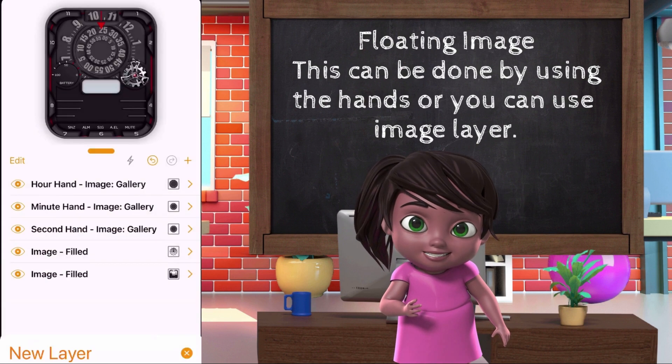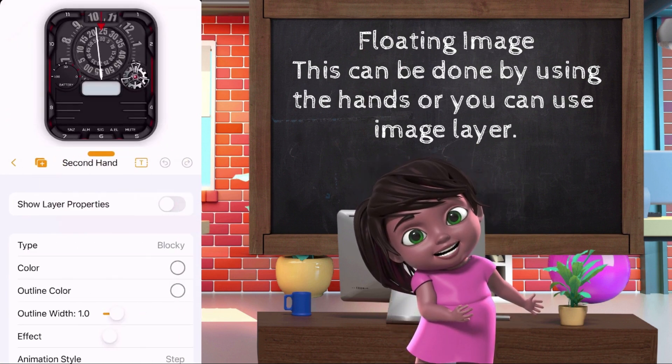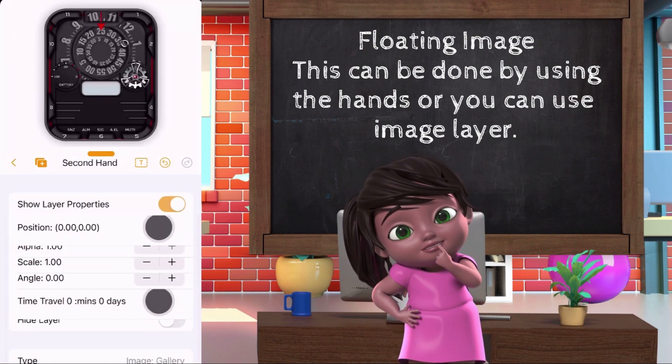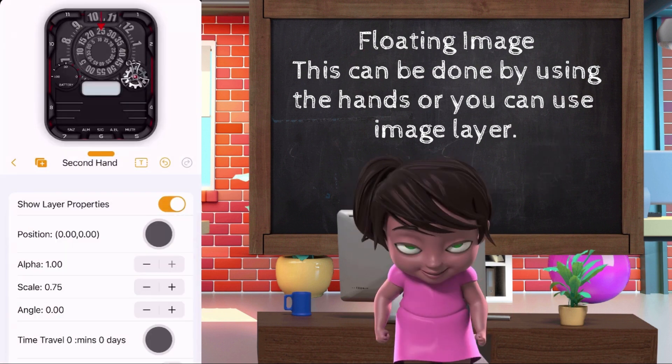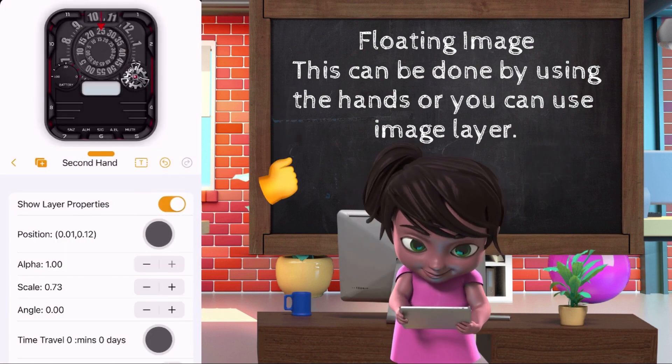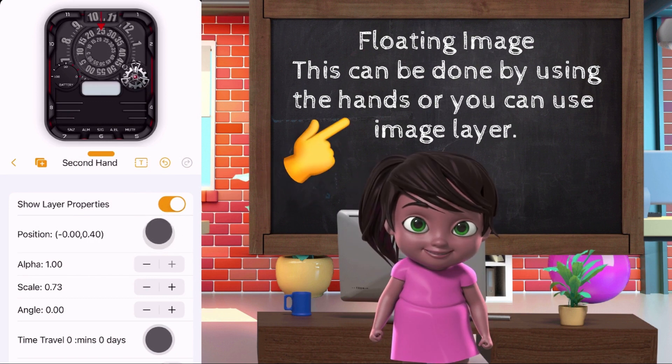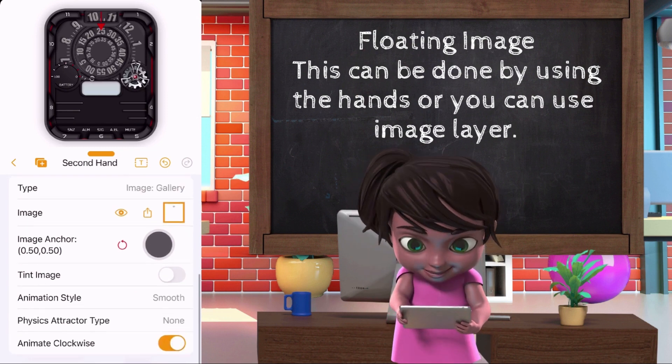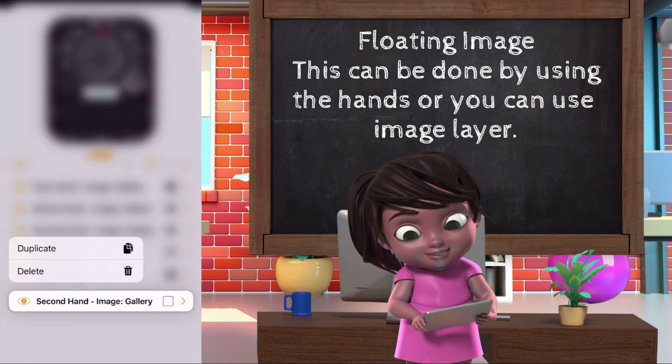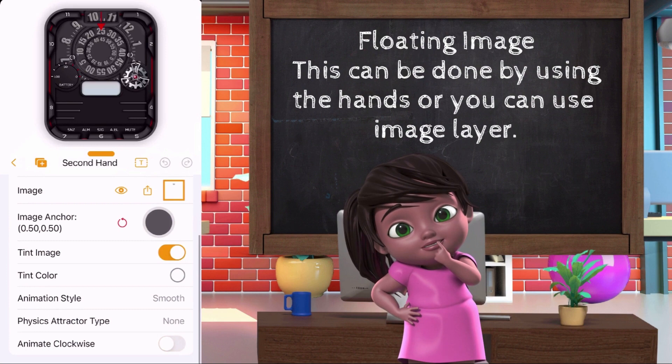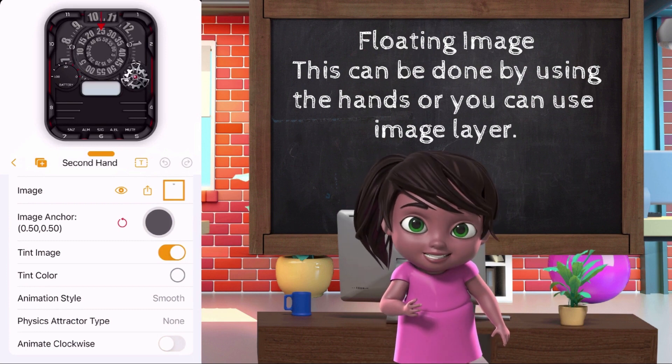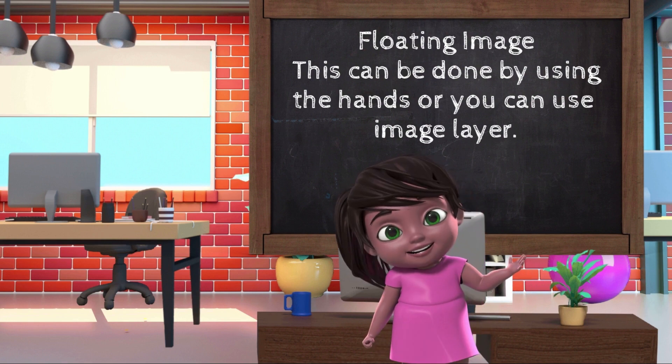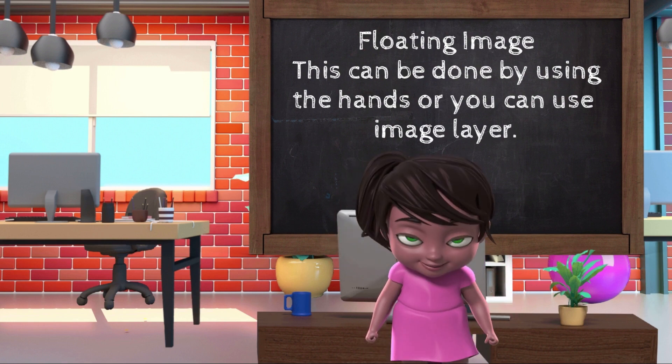Just create a seconds layer, then upload the floating metal we made. Duplicate the layer and turn off the animate clockwise, so that we will have two floating metal that rotates clockwise and counter clockwise. And, we are done. Let's see what we made.